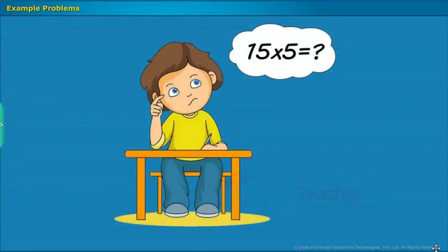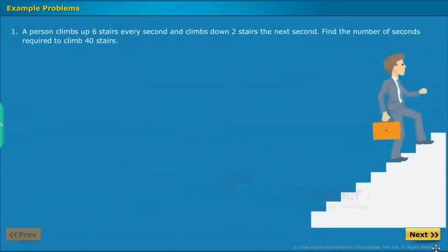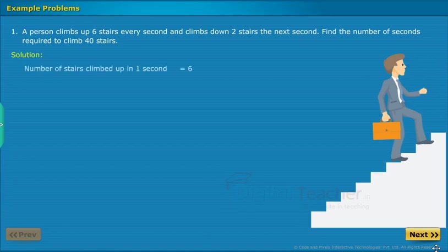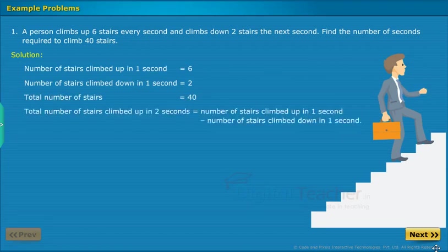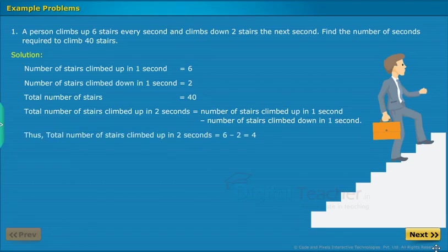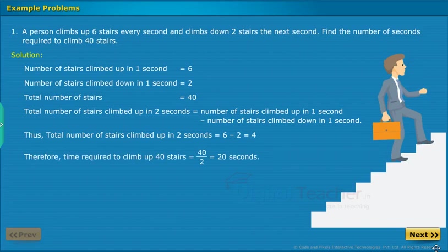Let us solve some example problems. A person climbs up 6 steps every second and climbs down 2 steps the next second. Find the number of seconds required to climb 40 steps. Solution: steps climbed up in 1 second equals 6; steps climbed down in 1 second equals 2; total steps are 40. Net steps climbed in 2 seconds equals 6 minus 2 equals 4. Therefore, time required to climb 40 steps equals 40 by 4 equals 20 seconds, but computed as 40 by 2 equals 20 seconds.